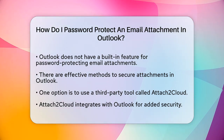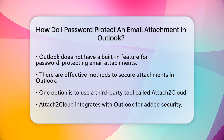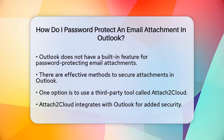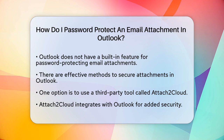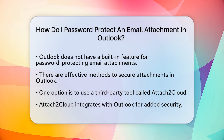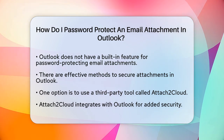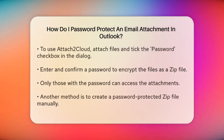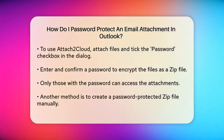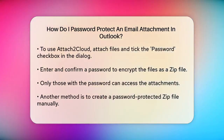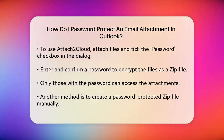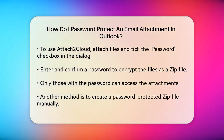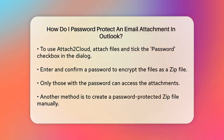One method is to use a third-party tool like AttachToCloud. This tool integrates with Outlook and allows you to secure your attachments with a password. Here's how you can do it. When you're composing an email in Outlook, you can attach files as you normally would. To secure these attachments, you need to tick the password checkbox in the attachment dialog.